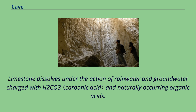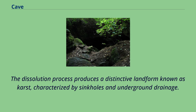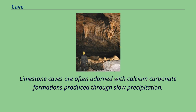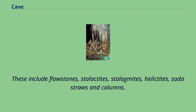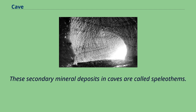Limestone dissolves under the action of rainwater and groundwater charged with H2CO3 and naturally occurring organic acids. The dissolution process produces a distinctive landform known as karst, characterized by sinkholes and underground drainage. Limestone caves are often adorned with calcium carbonate formations produced through slow precipitation. These include flowstones, stalactites, stalagmites, helictites, soda straws, and columns. These secondary mineral deposits in caves are called speleothems.